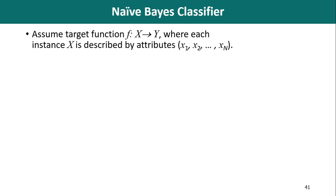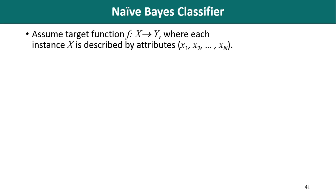We are talking about a classification problem where we are provided with a dataset containing instances of the form x, and every instance is described with n number of attributes. We would like to build a classifier that will classify the instances with some class label. Y here is the set of labels or values those we are going to predict. The Bayesian approach is to assign the most probable target value, denoted as ymap.